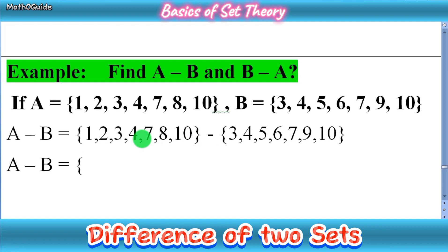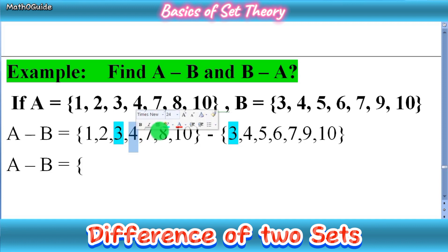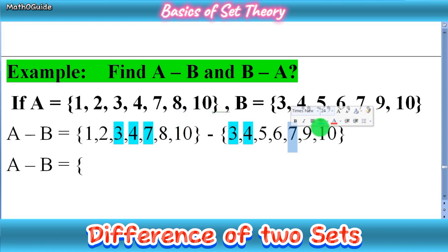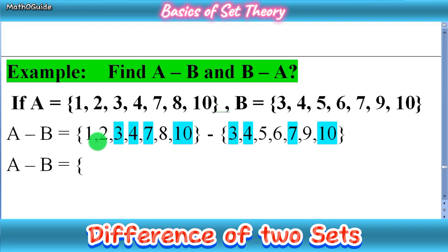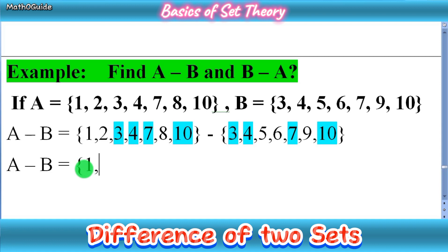To do this, we first identify the common elements. Checking both sets: 3 is common, 4 is common, 7 is common, and 10 is common — I'm coloring them to highlight. Since A minus B means elements of A that are not in B, we remove 3, 4, 7, and 10 from set A. The remaining elements are 1, 2, and 8, so A minus B equals {1, 2, 8}.